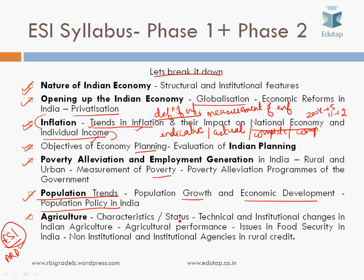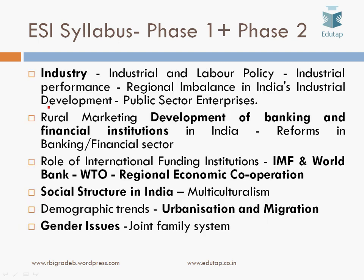The agriculture topics include characteristics, status, technical and institutional changes in Indian agriculture, agricultural performance, issues in food security in India, and non-institutional and institutional agencies in rural credit. The next topic is industry: industrial policy, labor policy, industrial performance, regional imbalance in India's industrial development, and public sector enterprises. Then rural marketing, development of banking and financial institutions in India, and reforms in the banking and financial sector.